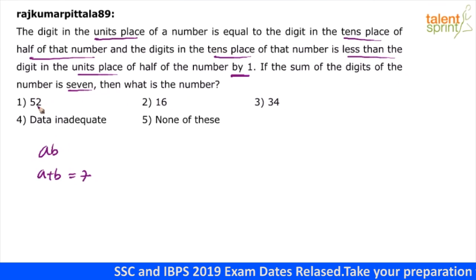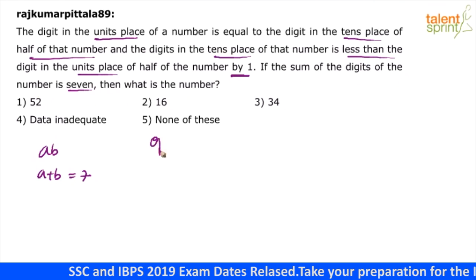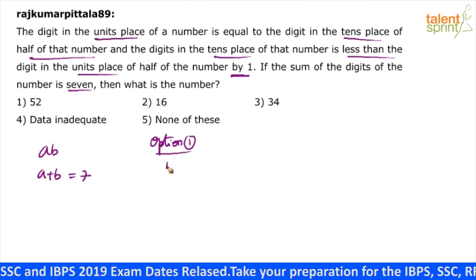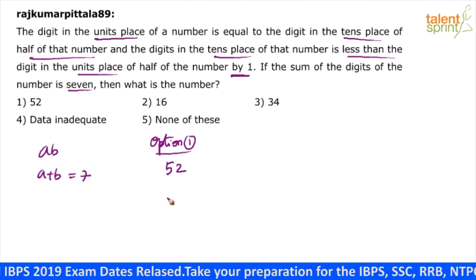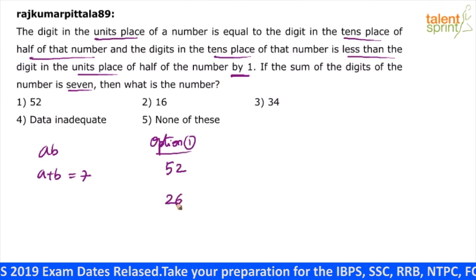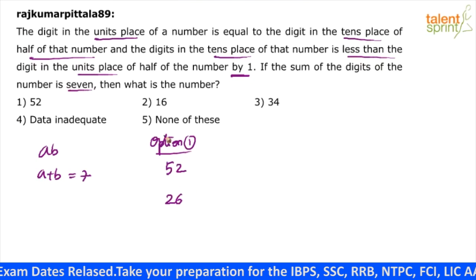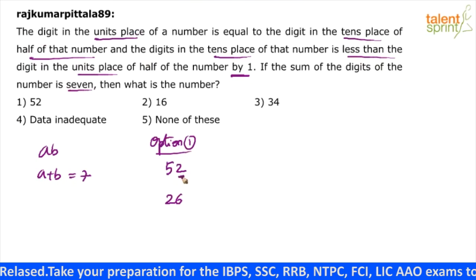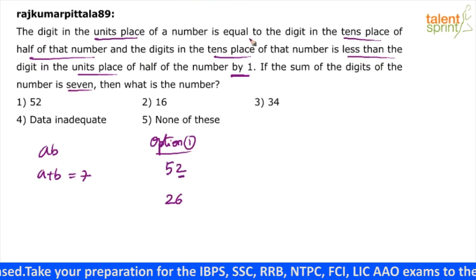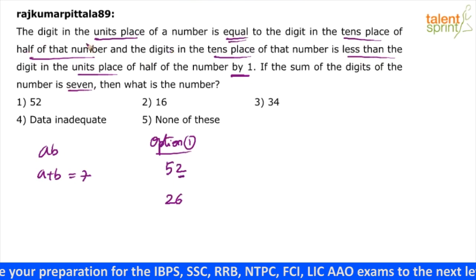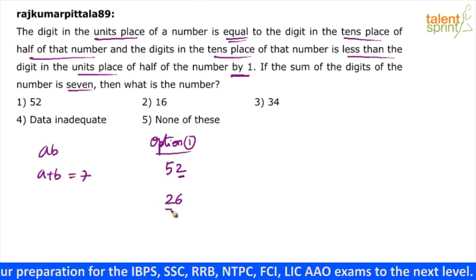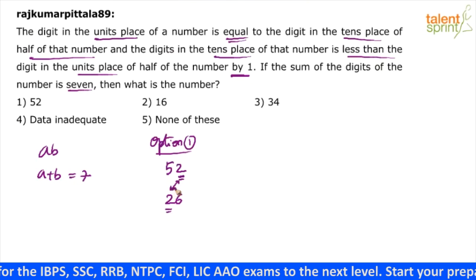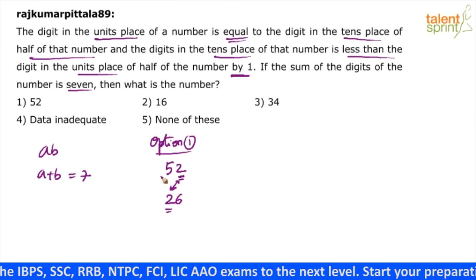Let us take option number 1 — 52 is the number. Half of 52 is 26. The digit in the units place of the number is 2, and the digit in the tens place of half of the number is also 2. These two are equal, so the first condition is satisfied.